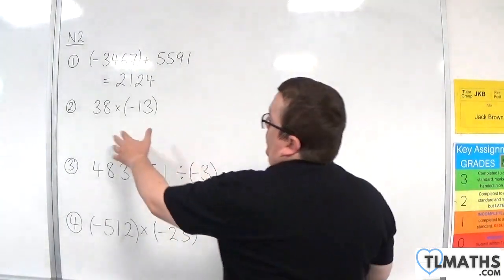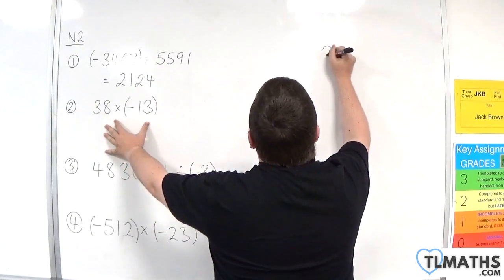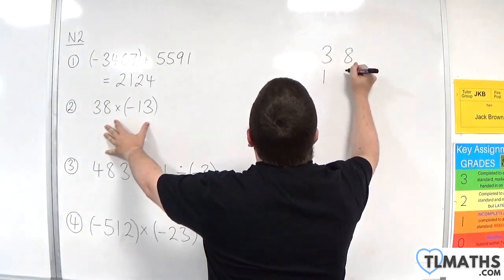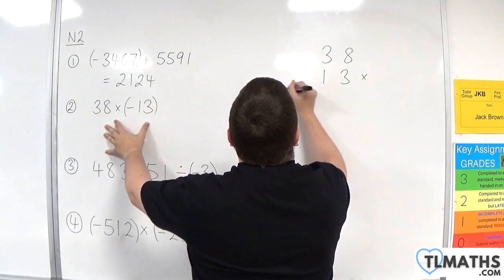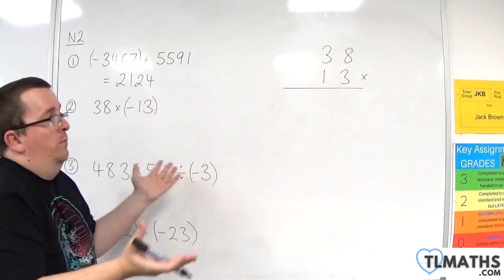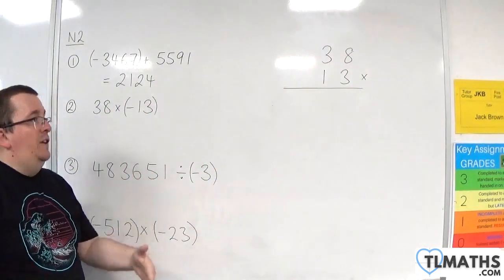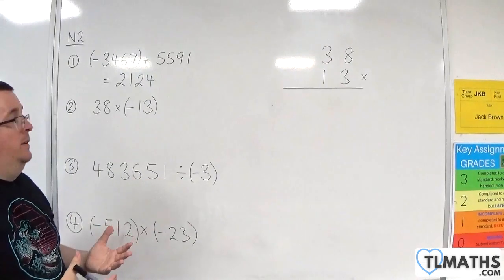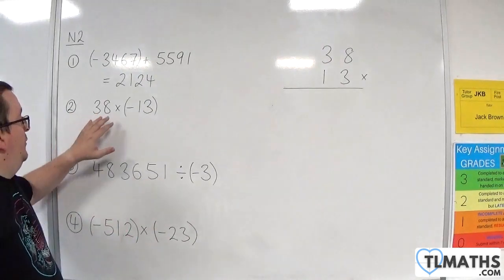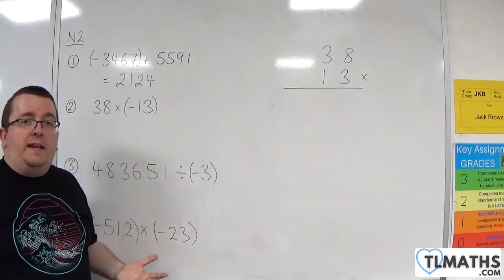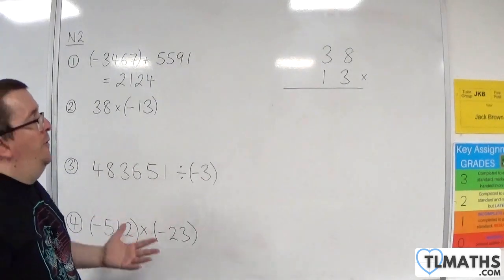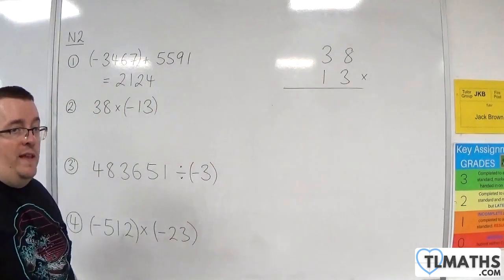So what I want you to do first is write it out as 38 times 13. We're going to ignore the minus sign and then just put the minus sign back in at the end. Because essentially, I've got 38 times minus 13, I know the answer is going to be negative. So if I could just work this out, I'd pop a minus sign on the end.